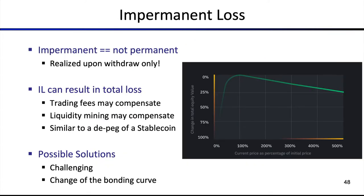Impermanent loss is called impermanent because it's not permanent — it's only realized when you actually take out your liquidity. So if in the previous example Alice had stayed in the pool, this loss would not have materialized. You can think of the initial position being here: if there's a price change from the initial price, you can see a change in total value — it can go down in either direction. Basically, whenever you have two diverging assets in the pool, the impermanent loss may materialize.